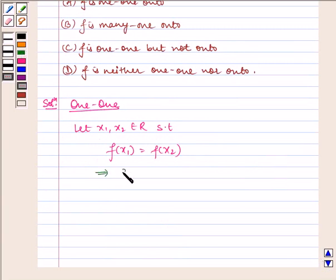Which implies 3x1 = 3x2, which implies x1 = x2. Therefore, f from R to R is one-one.